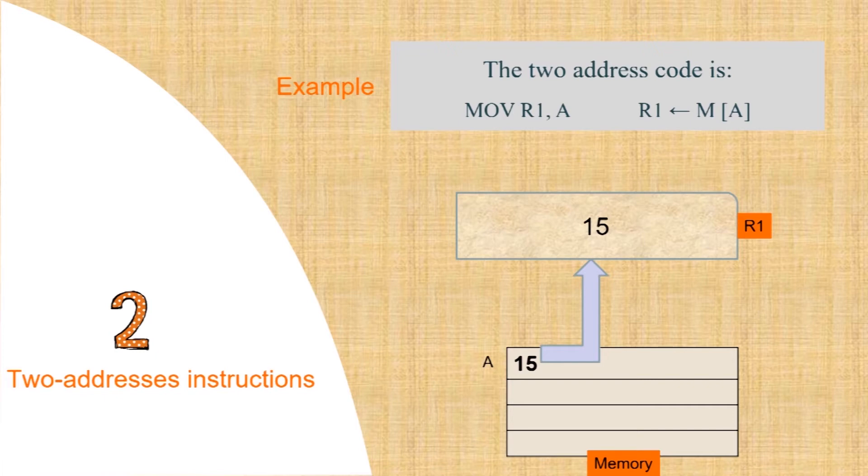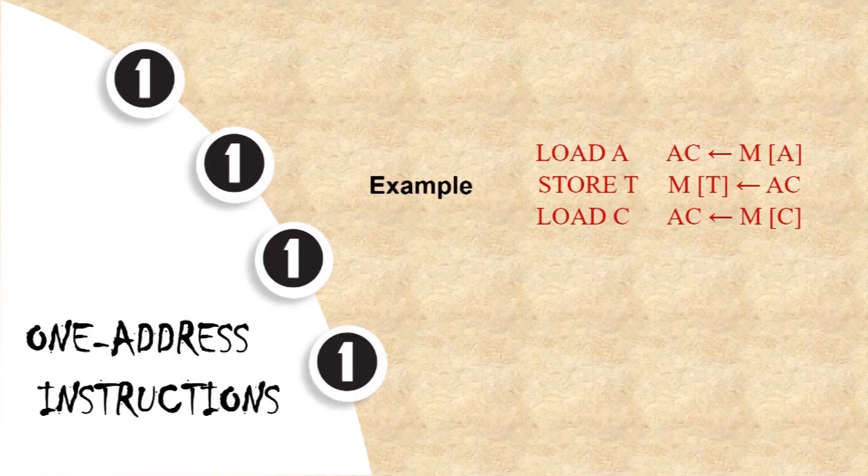Next, one address instruction. One address instructions are instructions that have one address field. Load A, AC arrow MA. Store T, MT arrow AC. Load C, AC arrow MC. These all are examples of one address instructions. All operations are done between the AC register and a memory operand. T is the address of a temporary memory location required for storing the intermediate result.